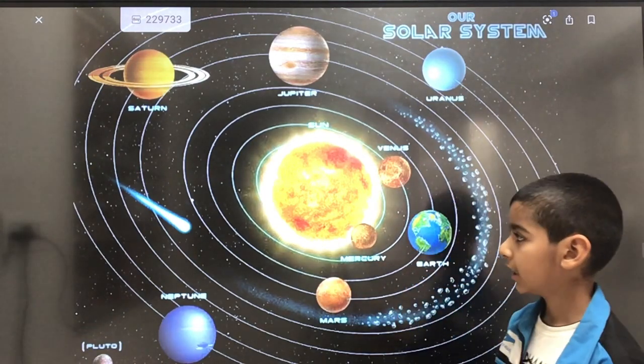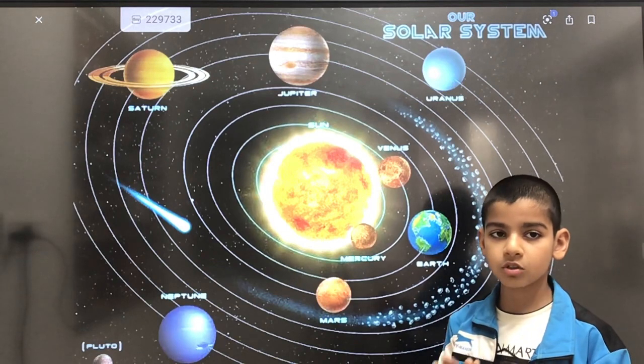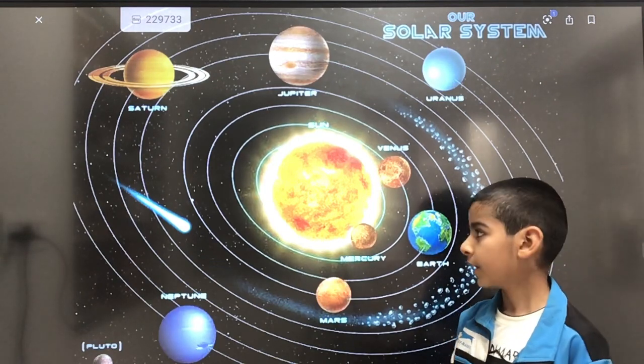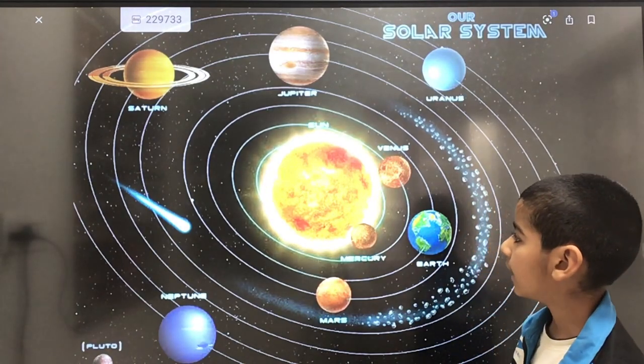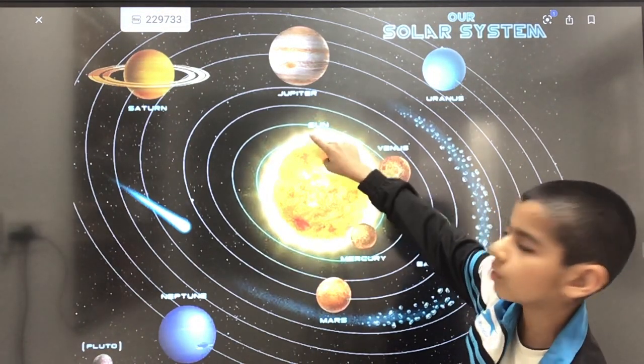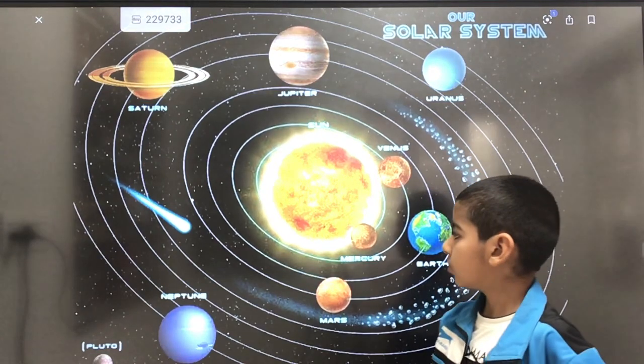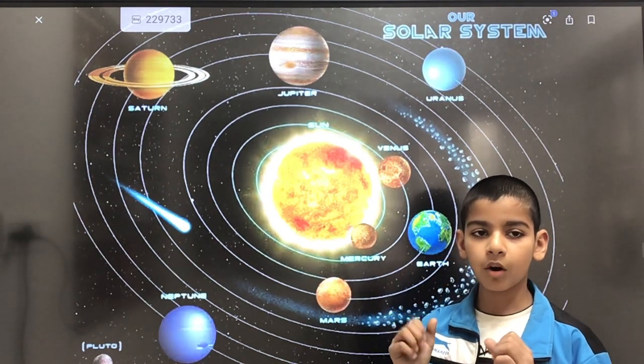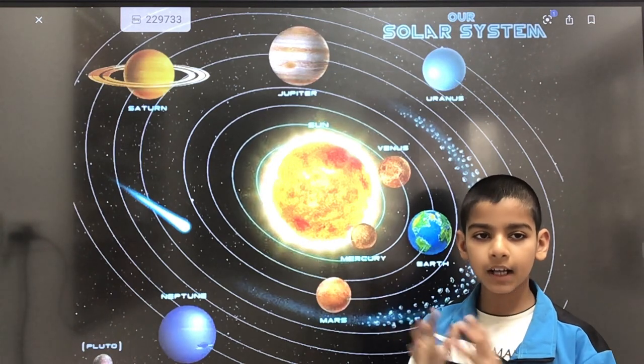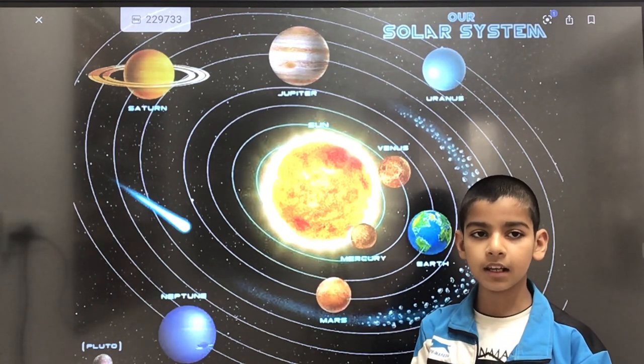The Sun has 99.9% of our solar system's mass, and its surface temperature is 5500 degrees Celsius. The outermost layer is known as the Corona. The source of Sun's energy is when four hydrogen atoms collide and combine to make helium.